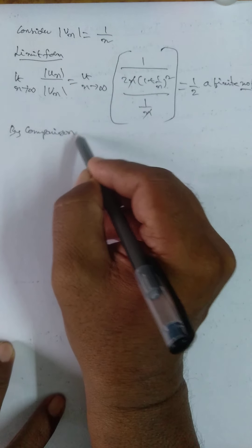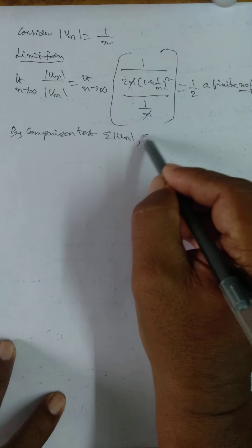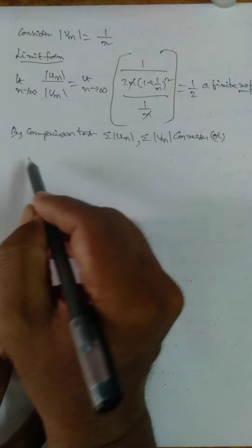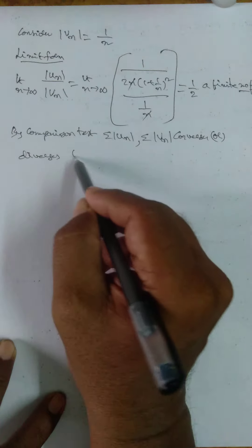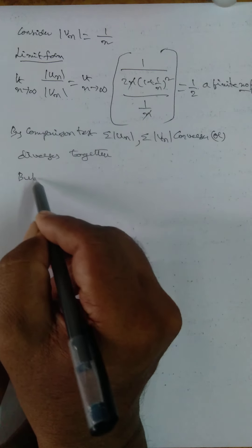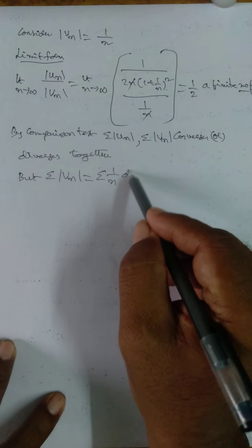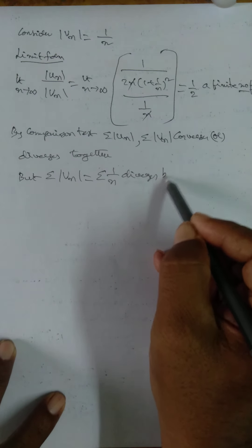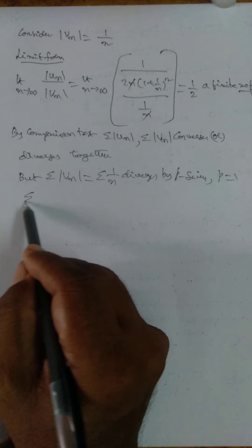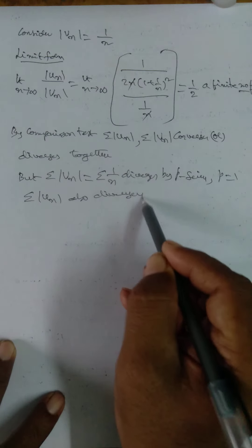By the comparison test, Σ|Uₙ| and Σ|Vₙ| converge or diverge together. But Σ|Vₙ| = Σ1/n diverges by P-series with P = 1. Therefore Σ|Uₙ| also diverges.